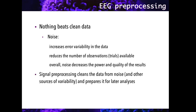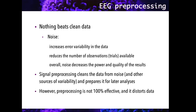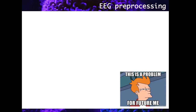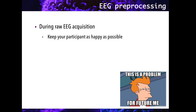Signal preprocessing has among its goals to clean the data from noise and other sources of variability and prepares it for later analysis. However, preprocessing does not fully remove all the noise, and some steps in it, such as filtering, can distort the data. So imagine that you could come back from the future to warn you: when you're collecting data for your experiments, keep your participants as happy as possible — first because happiness is good, but also because a happy participant gives happy data, and this usually means better quality data.